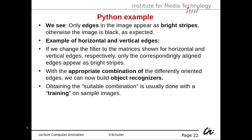Going back to the generic edge detector, we see that only edges in the image appear as bright stripes; otherwise the image is black as expected. We saw examples of horizontal and vertical edges. If we change the filter to the matrices for horizontal or vertical edges, only the correspondingly aligned edges appear as bright stripes. With the appropriate combination of differently oriented edges, we can now build object recognizers.